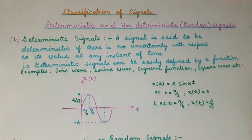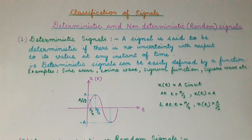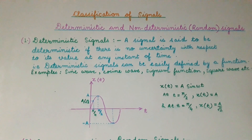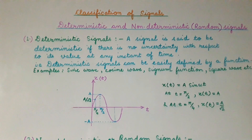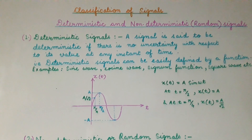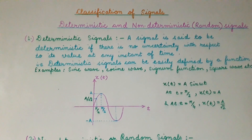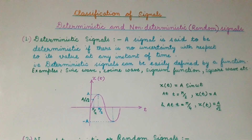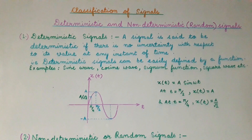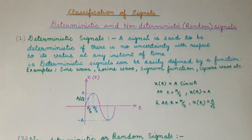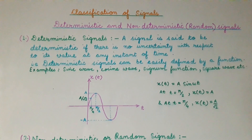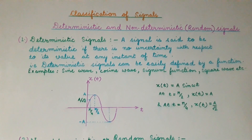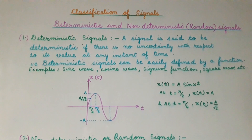From the definition, a signal is said to be deterministic if there is no uncertainty with respect to its value at any instant of time. That is, deterministic signals can be easily defined by a function. Some common examples of deterministic signals are sine wave, cosine wave, signum function, square wave, etc.